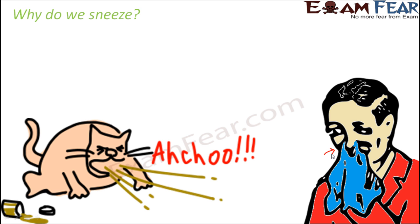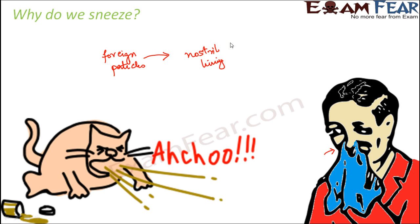However, foreign particles can still enter the nasal cavity and reach the lining of the nostrils. When a foreign particle irritates the nostril lining, a signal is sent to the brain that an outsider has entered. The brain immediately sends back a message to get rid of that foreign particle.